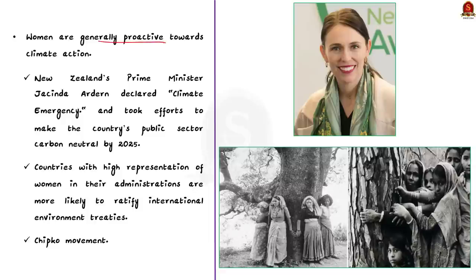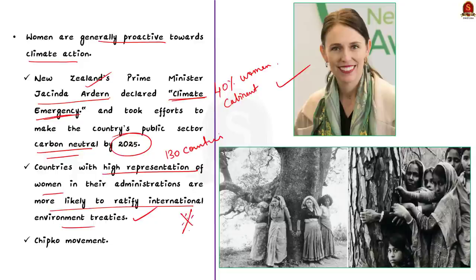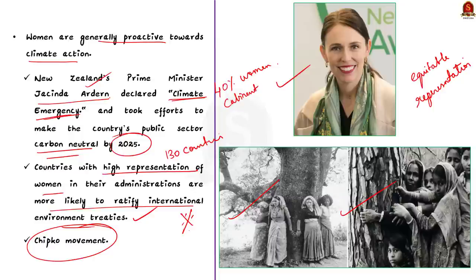Women are also generally proactive in addressing climate change. For example, when former New Zealand Prime Minister Jacinda Ardern came to power, she declared a climate emergency and had 40% women in her cabinet, setting in motion a plan to make the country's public sector carbon neutral by 2025. A study of 130 countries showed that nations with high representation of women in their administration are more likely to ratify international environment treaties. In India, the famous Chipko movement was led by women from rural communities. So, if women are given equitable representation in climate change policy, an effective climate change mitigation and adaptation strategy can be developed.